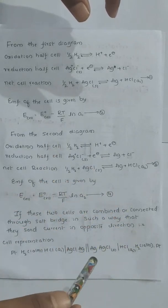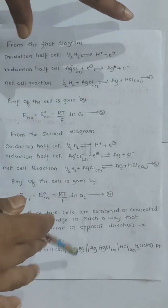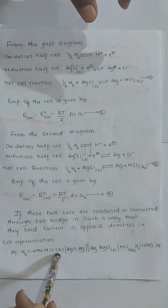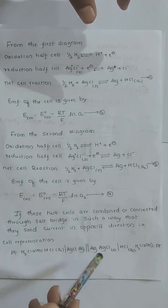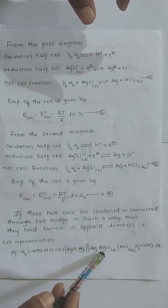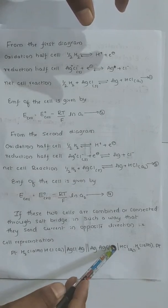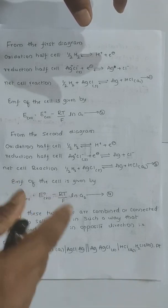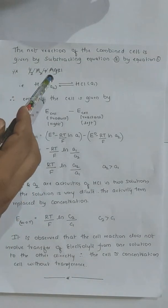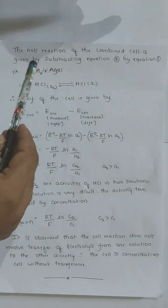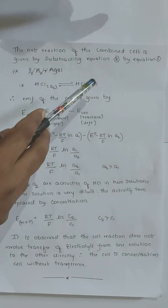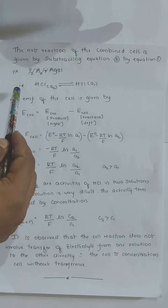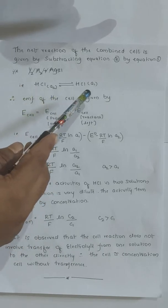The overall reaction of the combined cell is given by subtracting equation 3 from equation 1. The cell representation is: Pt | H2(1 atm) | HCl(A1) | AgCl | Ag — connected through the salt bridge — Ag | AgCl | HCl(A2) | H2(1 atm) | Pt. Subtracting, we get: HCl at activity A2 is in equilibrium with HCl at activity A1.